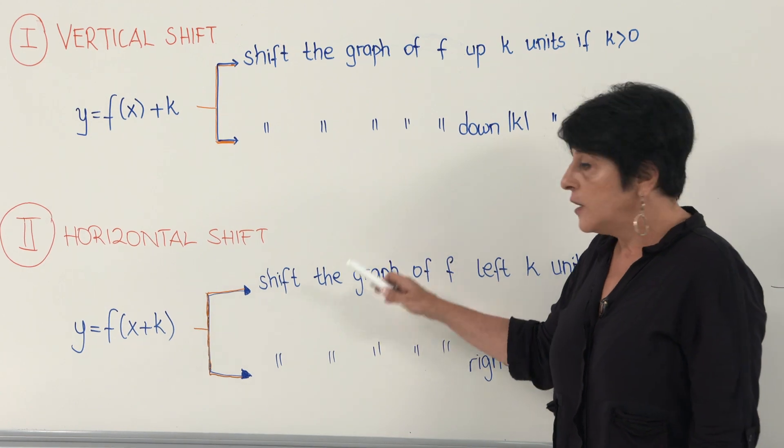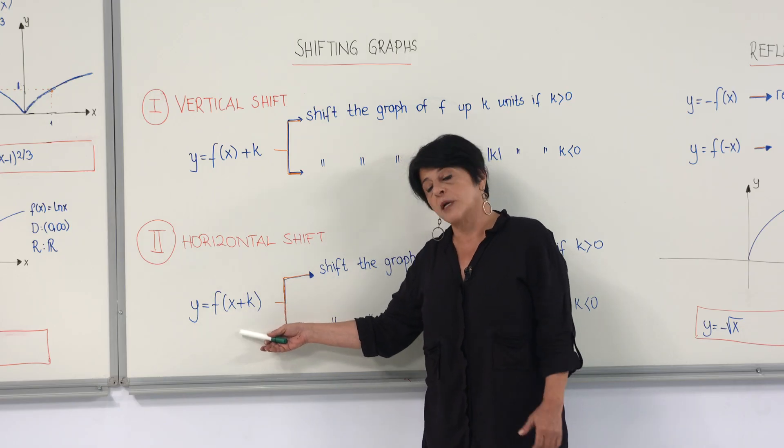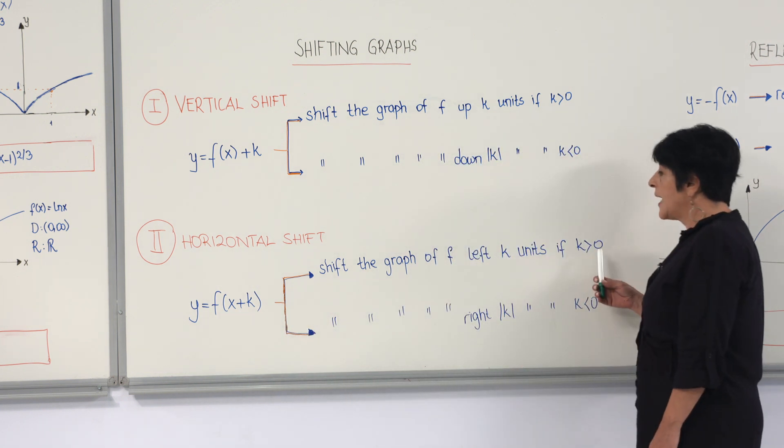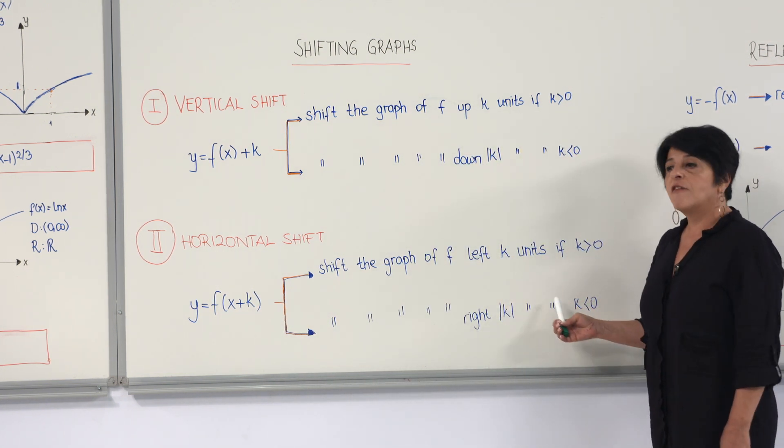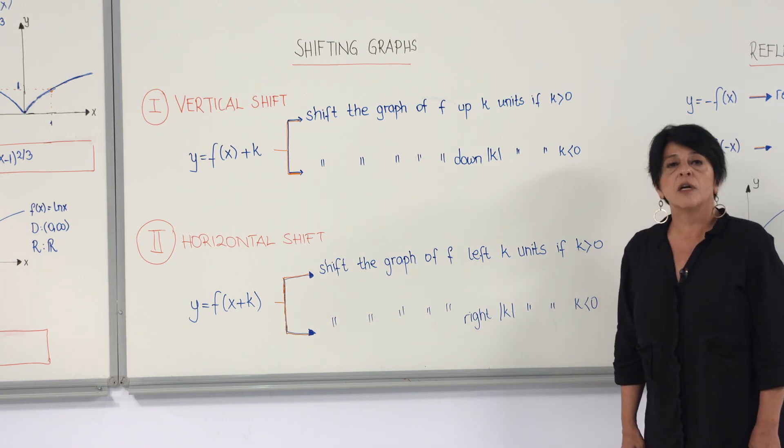And for horizontal shift, you need to look at this one: y equals f of x plus k. Again, if k is positive, you shift it left k units. If k is negative, you shift it right by absolute value of k units.